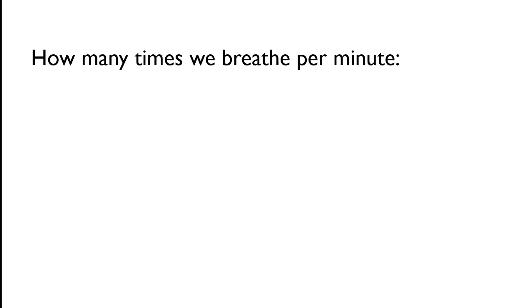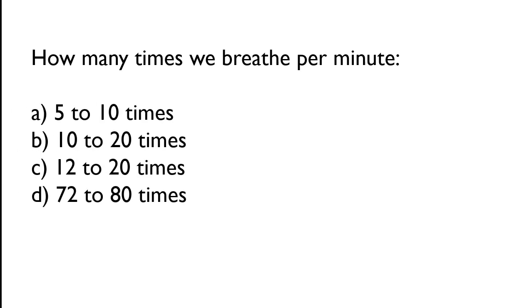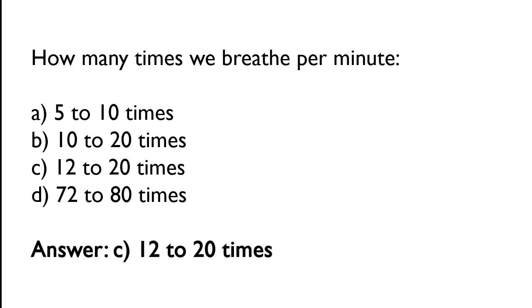How many times we breathe per minute? Options: 5 to 10 times, 10 to 20 times, 12 to 20 times, 72 to 80 times. The correct answer is option C — 12 to 20 times we breathe per minute.